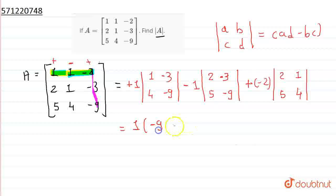Minus 9 into 1, minus 9. Minus 3 into 4 is minus minus plus 12. Minus 1. Here, minus 9 into 2, minus 18. Here, 5, minus 3, minus 15, minus minus plus 15. And here, minus 2. 2 into 4, 8 minus 5.